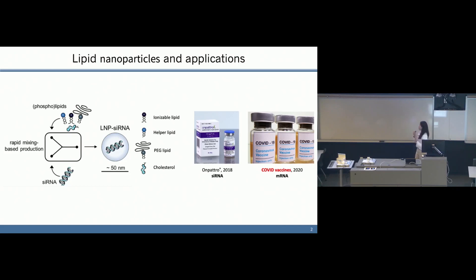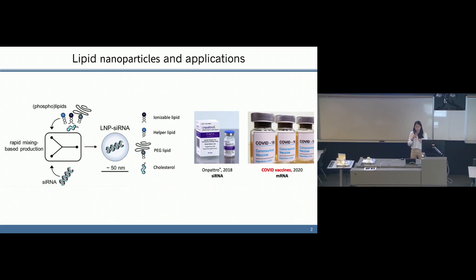For some quick background on how they are formed: LNPs are composed of four different components in their simplest form — the ionizable lipid, the helper lipid, the PEG lipid, and cholesterol. Using a rapid mixing method alongside nucleic acid, we can form lipid nanoparticles ranging from 40 to 80 nanometers in size, and they've been used for different purposes, recently exemplified by the Onpattro drug and COVID-19 vaccines.